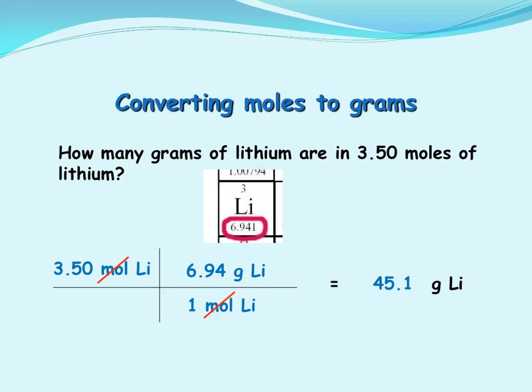As far as the math goes, we'll multiply 3.50 times 6.94 divided by 1 to come up with the answer of 24.29 grams. The unit is the leftover unit from the bracket: grams of lithium. And that answers the question.